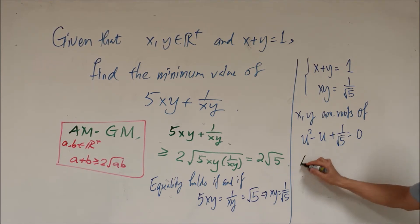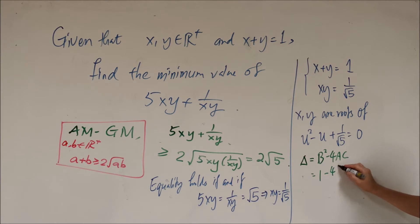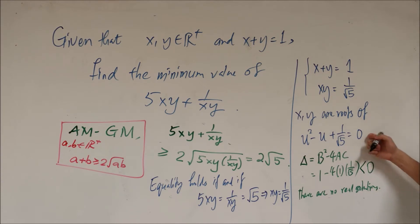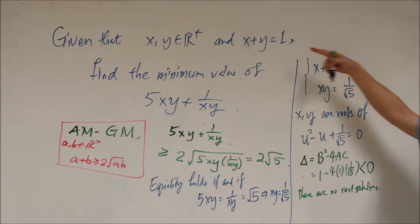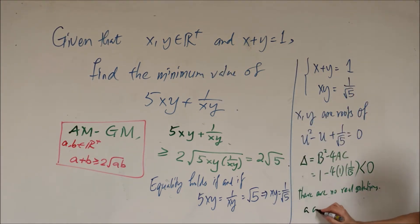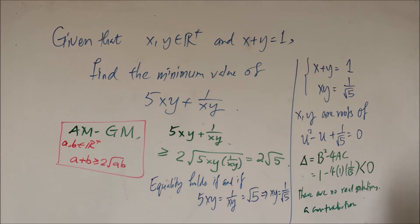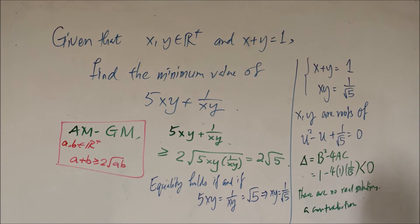From here, we compute the discriminant: b squared minus 4ac equals 1 minus 4 times 1 over root 5, and this is negative. There are no real solutions to the equation, which is a contradiction because we assumed x and y are real numbers and roots of this equation.